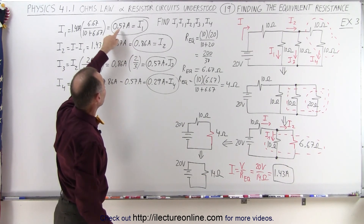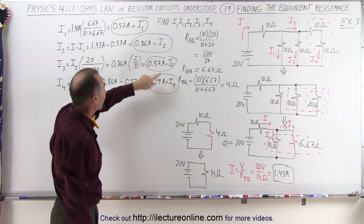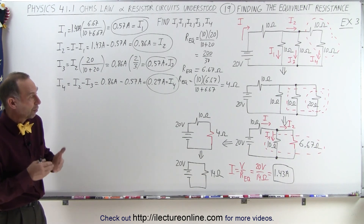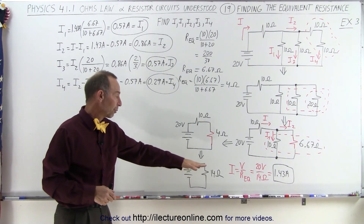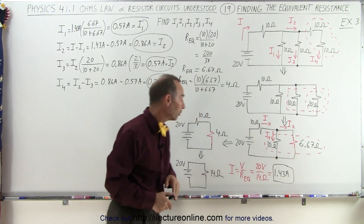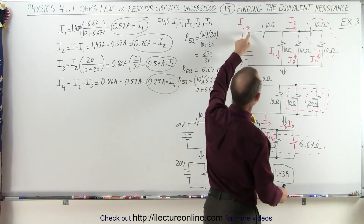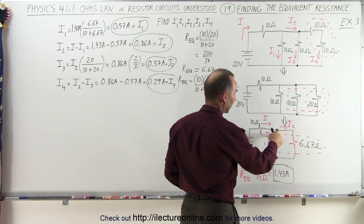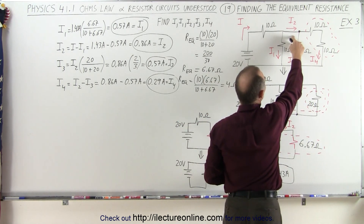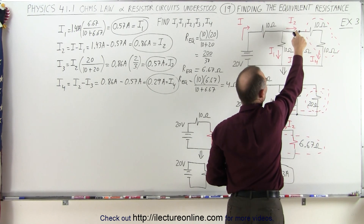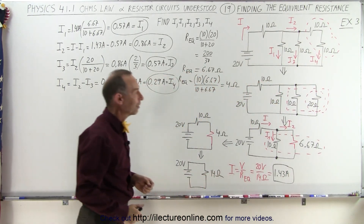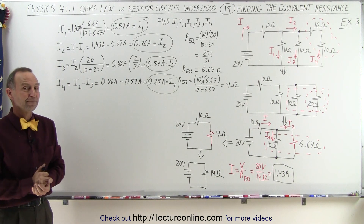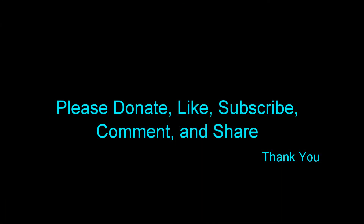So we have I1 equal to 0.57 amps, I2 equal to 0.86 amps, I3 equal to 0.57 amps, and I4 equal to 0.29 amps. We first find the equivalent resistance; from that we find the total current; then we divide it — I splits into I1 and I2, and then I2 splits further into I3 and I4. That's how we find the currents in each branch of a circuit like this.